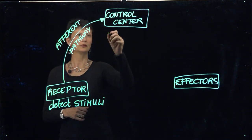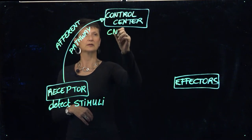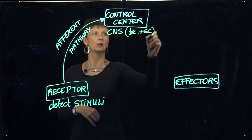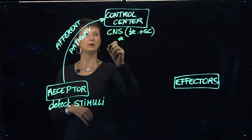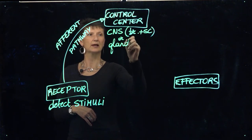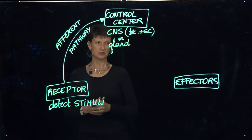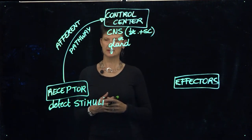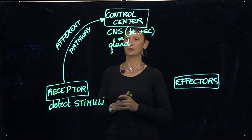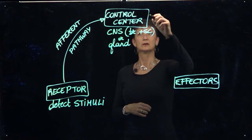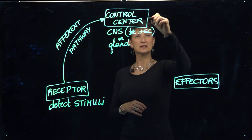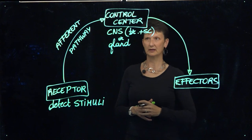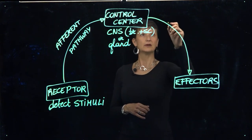Very often the control center is going to be the central nervous system, which includes the brain and the spinal cord. Or it could be a major gland that functions as the control center. The control center processes the information arriving from the receptor, and after processing, can send out commands via the efferent pathway.